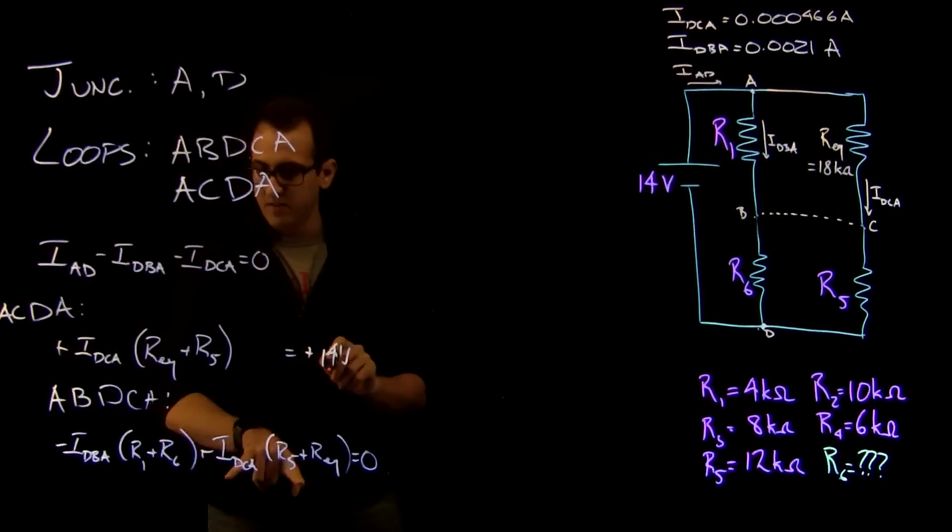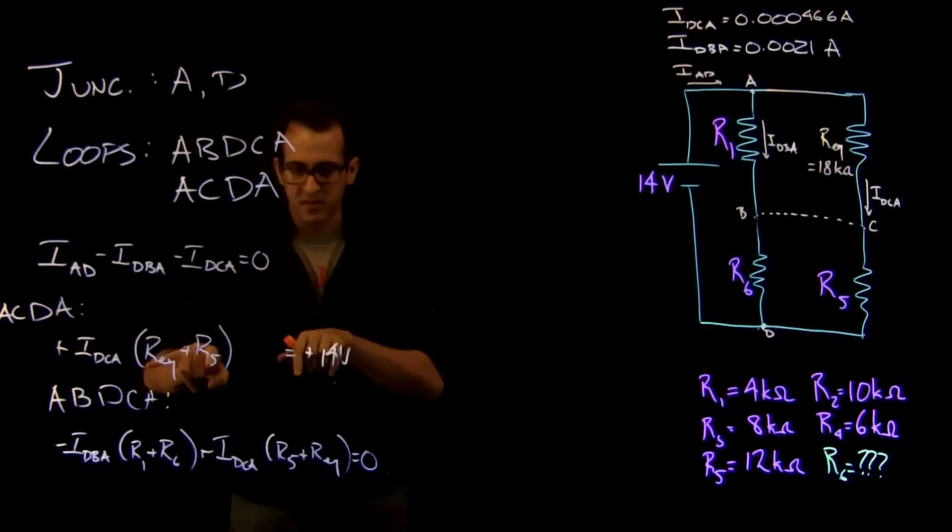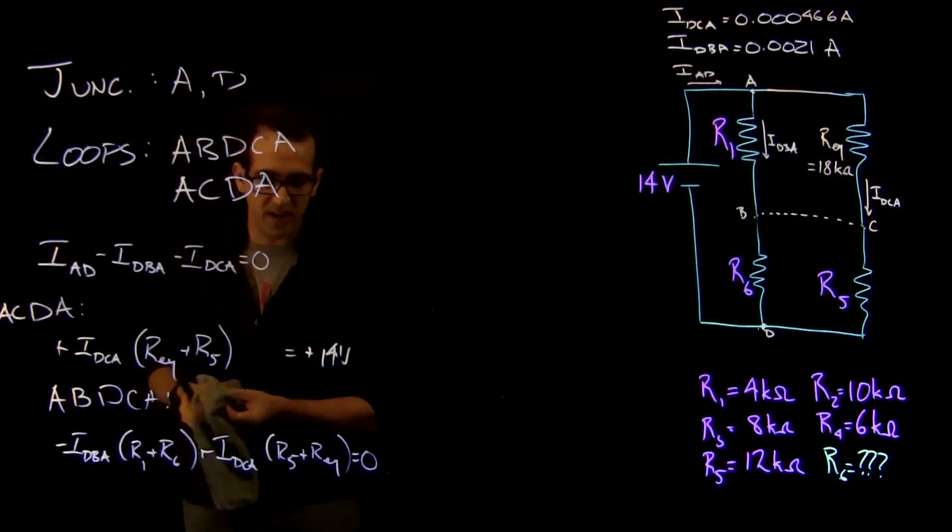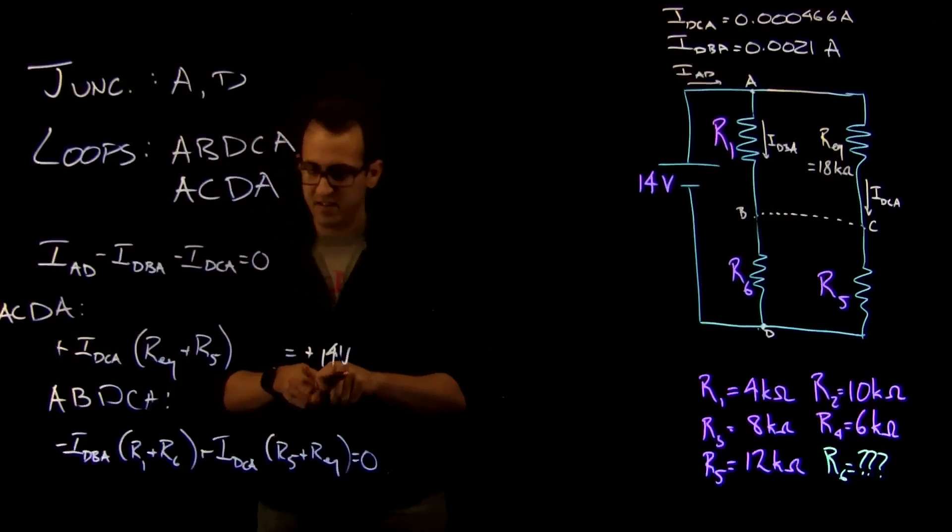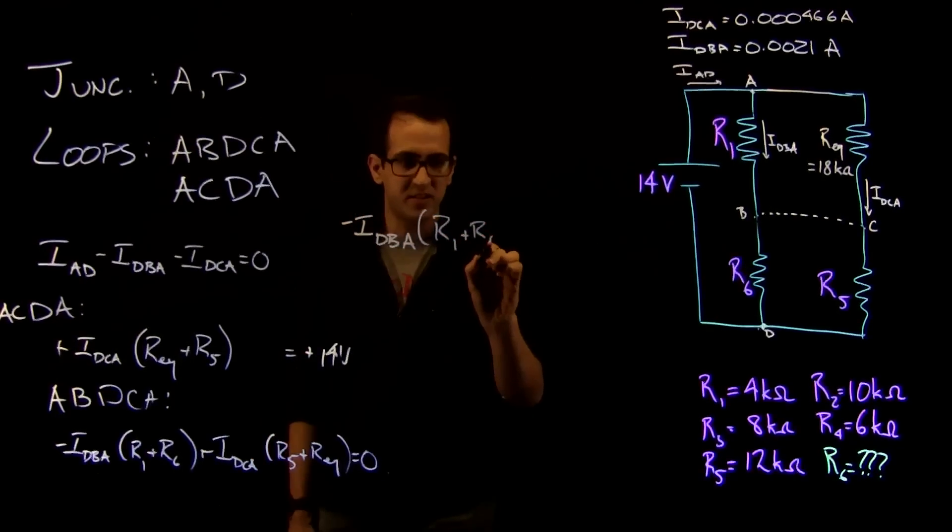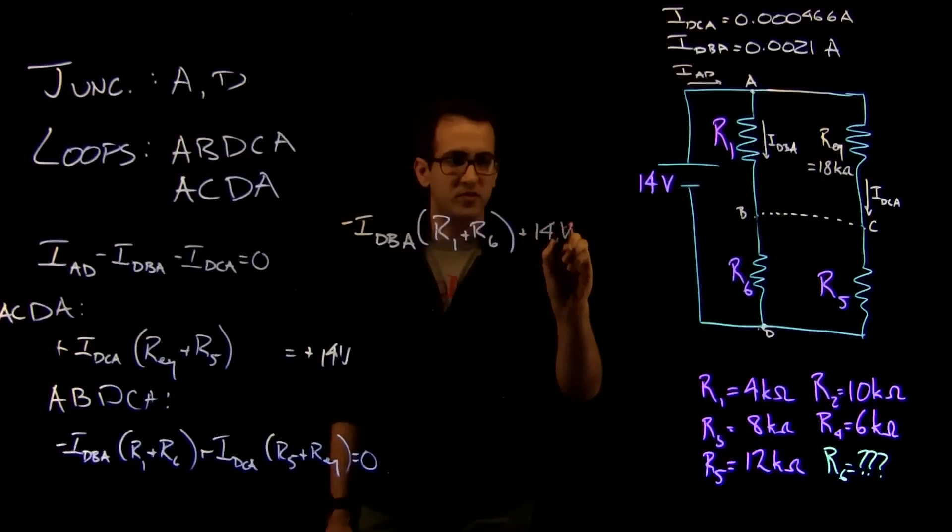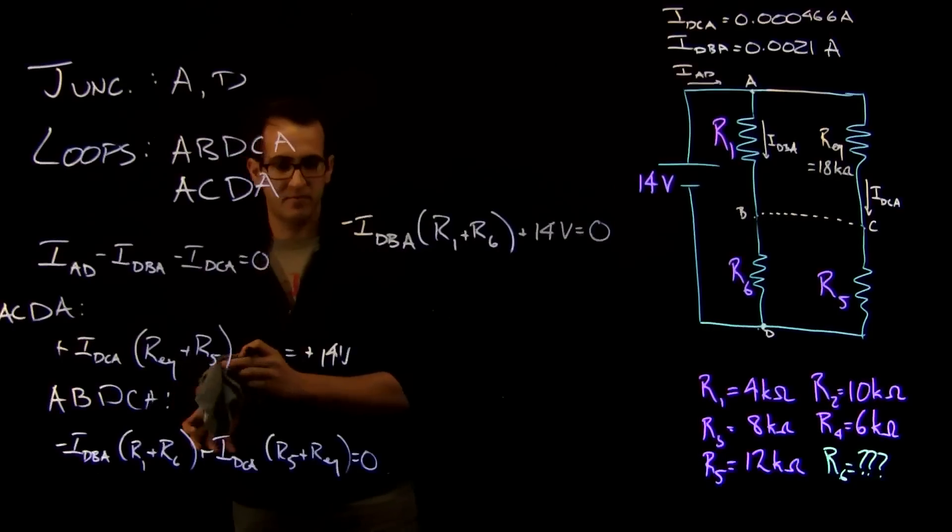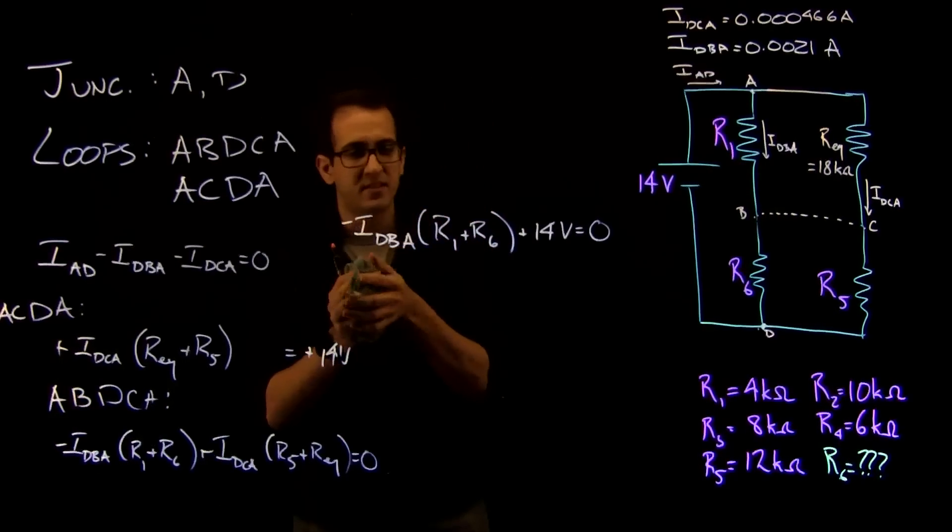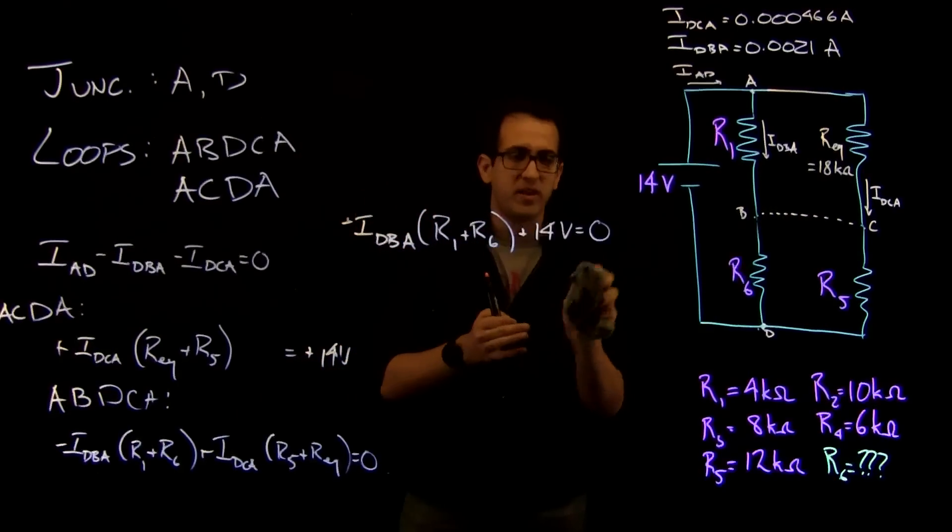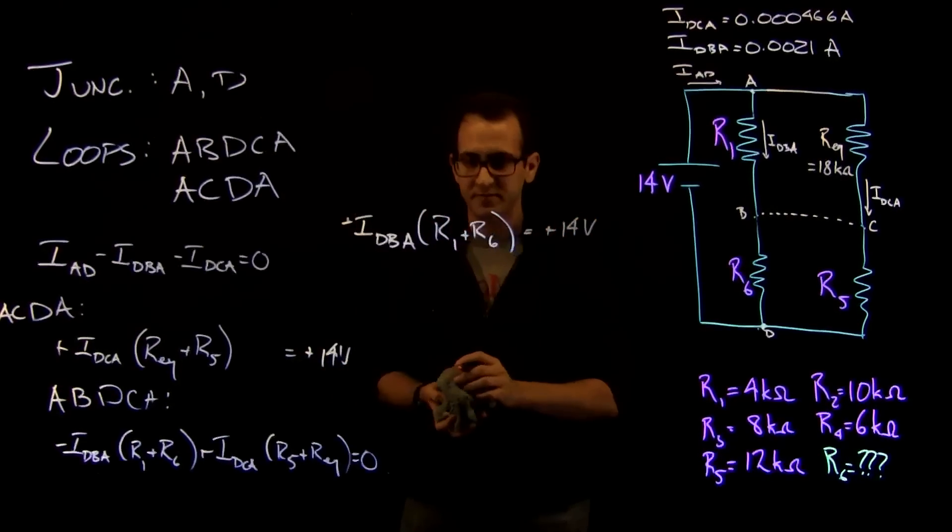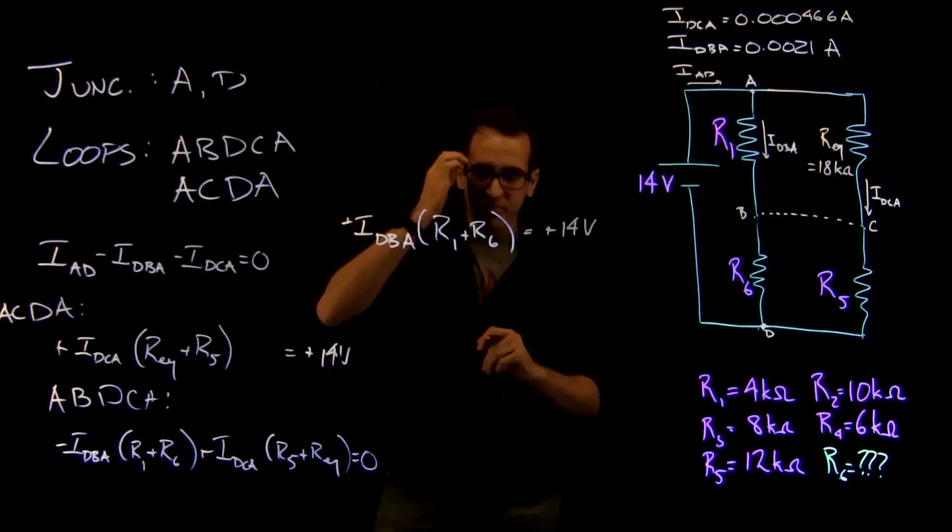So, we also know from this loop here that IDCA times REQ plus R5, which we also see here, is equal to 14 volts. So, let's just go ahead and write that as minus IDBA times R1 plus R6 plus 14 volts is equal to 0. Let's subtract 14 volts from both sides, which will mean we have basically the same thing we did before.